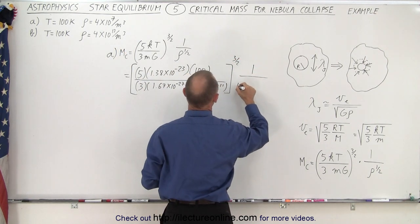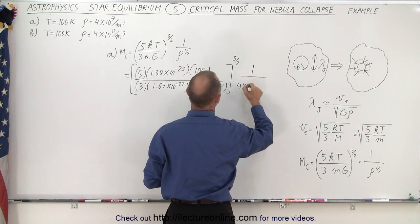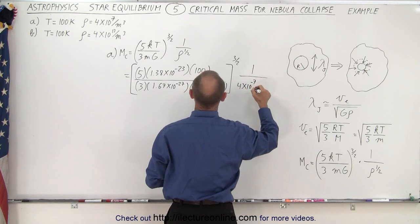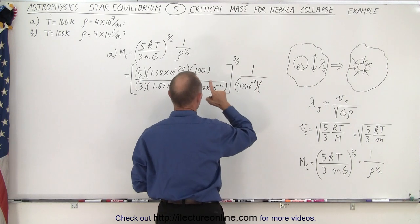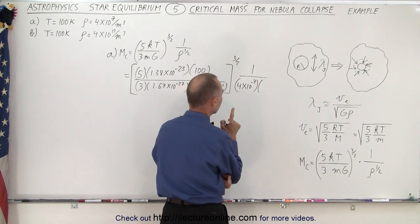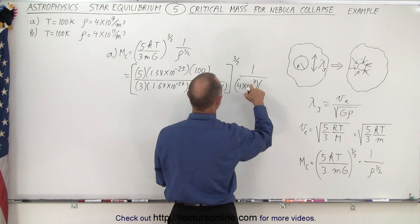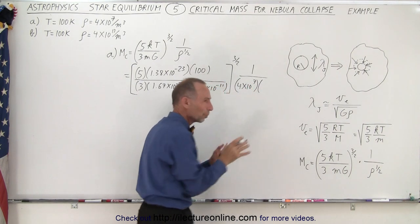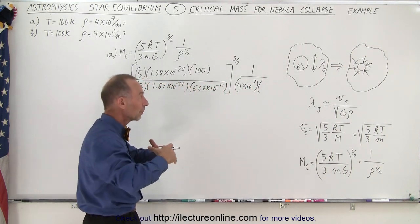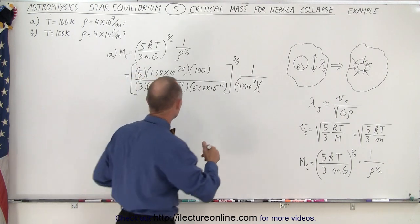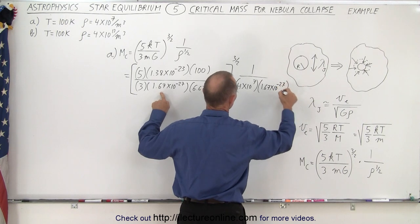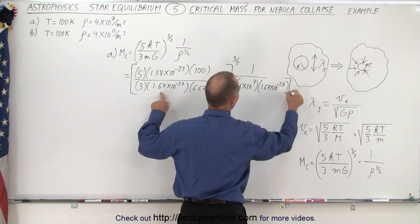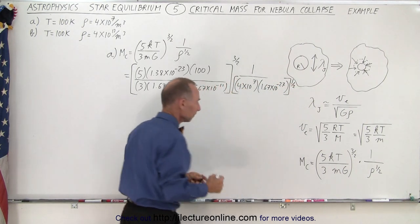And then we divide that by the density. Now the density is going to be 4 times 10 to the 7 per cubic meter but then we also have to multiply that times the mass. Not minus but plus 7. So that's the number of molecules per cubic meter but now we have to multiply by the mass per molecule which is 1.67 times 10 to the minus 27 assuming it's hydrogen and then we have to take the square root of that. There we go.